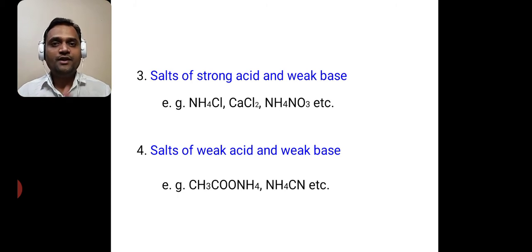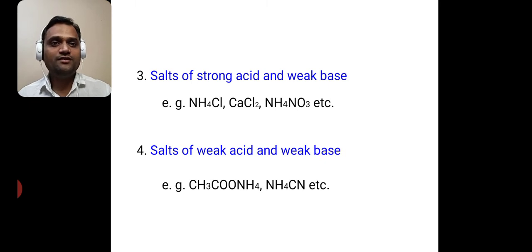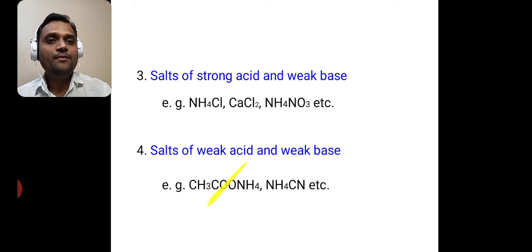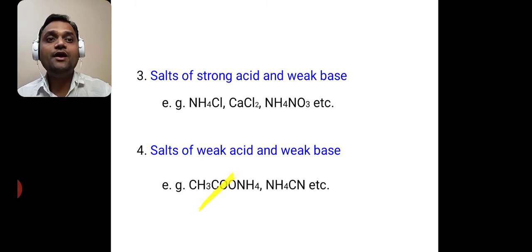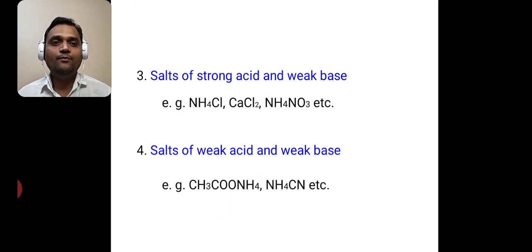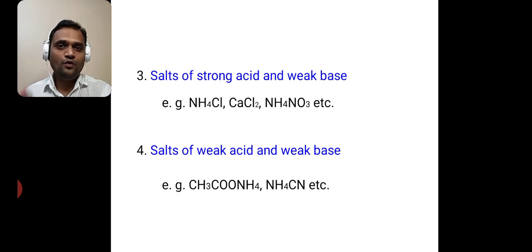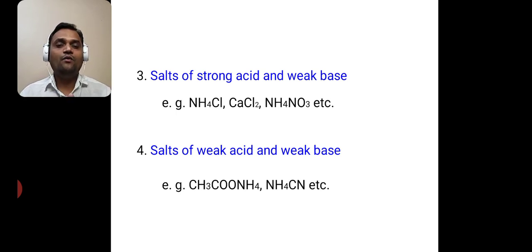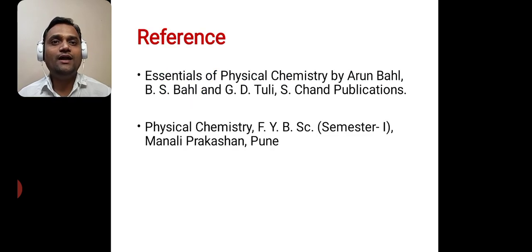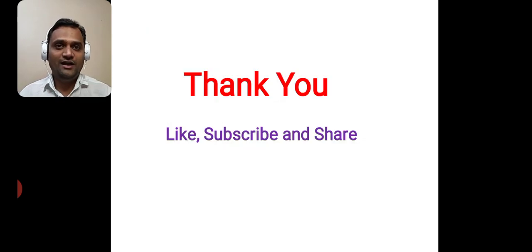The fourth type is salts of weak acid and weak base. For example, ammonium acetate and ammonium cyanide. Ammonium acetate is made up from acetic acid (a weak acid) and ammonium hydroxide (a weak base). So ammonium acetate is a salt of weak acid and weak base. In this lecture, we have studied salt hydrolysis, neutralization reaction, and the four types of salts. Thank you.